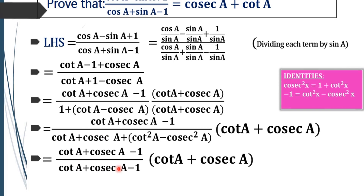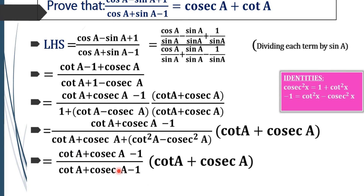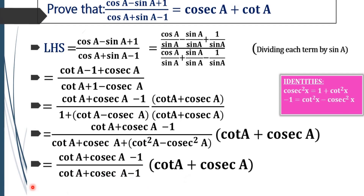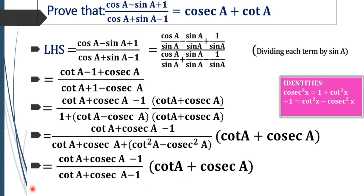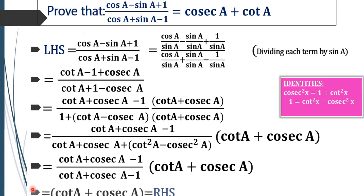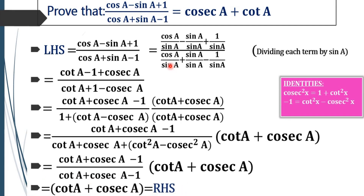So that term becomes minus 1, and our denominator becomes cot A plus cosec A minus 1. The numerator and denominator then cancel each other, and what remains is cot A plus cosec A. The simple trick used here is multiplying the numerator and denominator by (cot A plus cosec A) so that we obtain our required RHS.